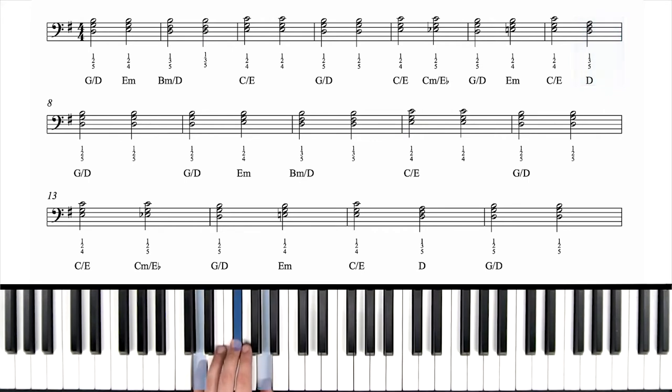But then we have a D major in root position. This one's new. Now we're on the next line down, measure eight. Back to our G over D and we'll do it two times. Now we have another G over D. This starts the second half of this section. And guess what?